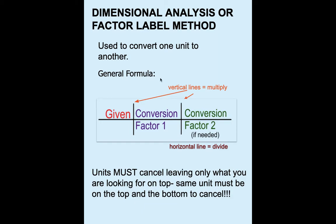The general formula you're going to use is: the given is always listed first, and then you'll list your conversion factors. Sometimes you'll have one conversion factor, sometimes two, sometimes three — you can have as many as you need to complete the problem. Your vertical lines mean to multiply, while your horizontal lines mean to divide. The units must cancel out, leaving only what you are looking for on the top.